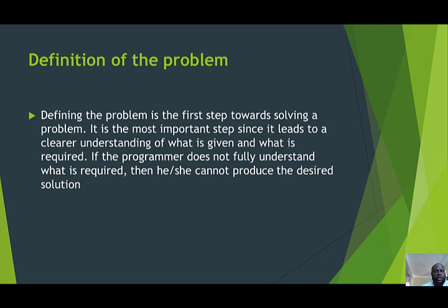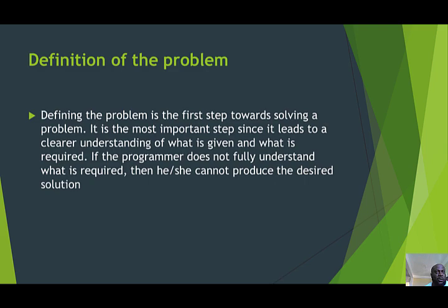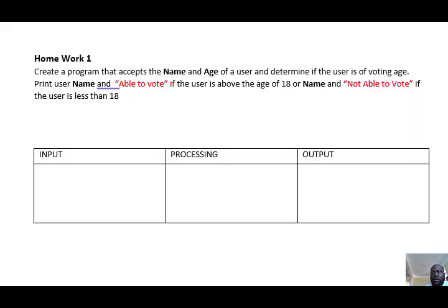In computer science, an IPO chart is used to decompose problems into simpler blocks so they can be understood by a computer system. It's called an IPO chart or a defining diagram. As you can see on the screen, the defining diagram has three columns: input, processing, and output.